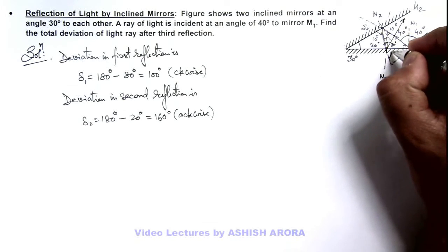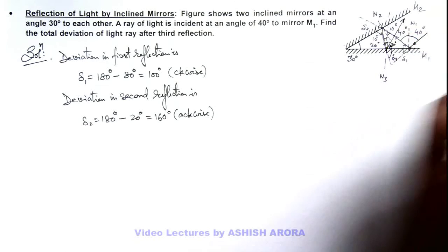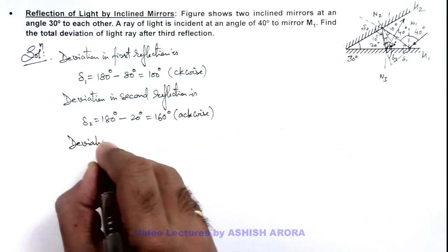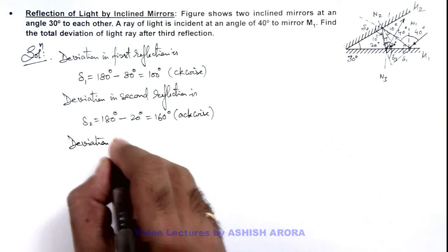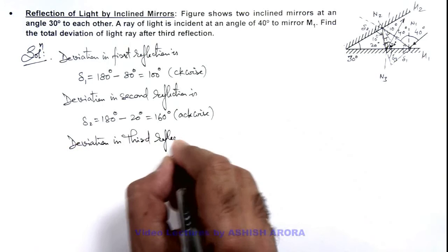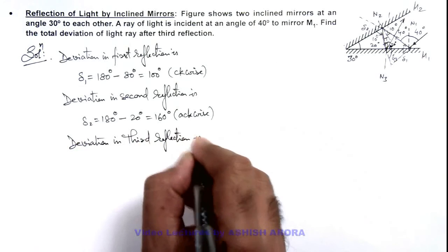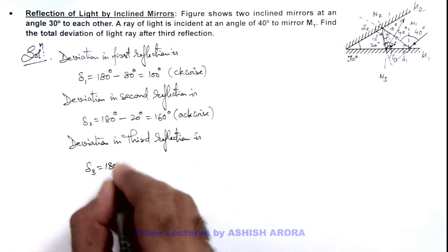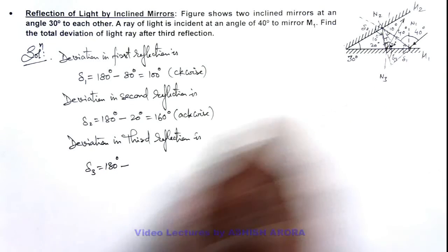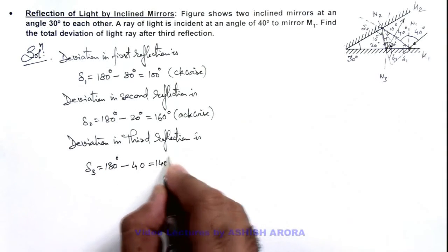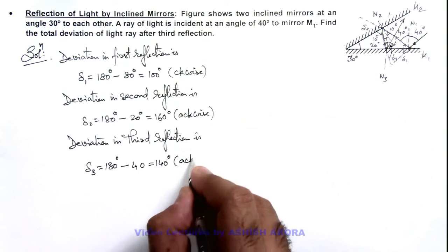The deviation is again in the anti-clockwise direction, which is delta 3. The deviation in the third reflection can be written as delta 3 which is 180 degrees minus twice the incidence angle, which is 40, so this is 140 degrees. This is again an anti-clockwise deviation.